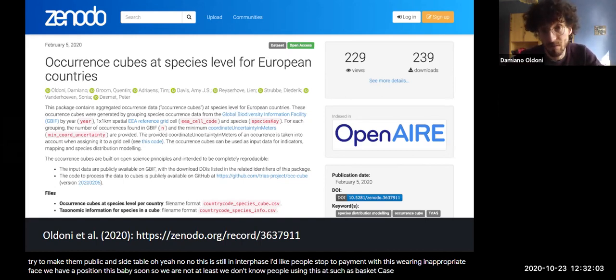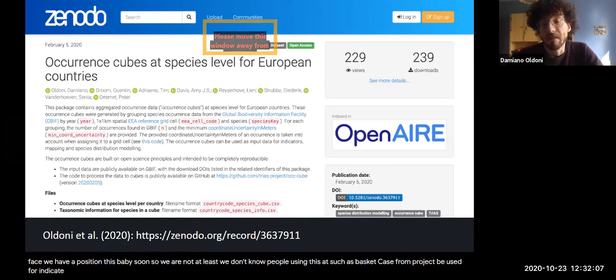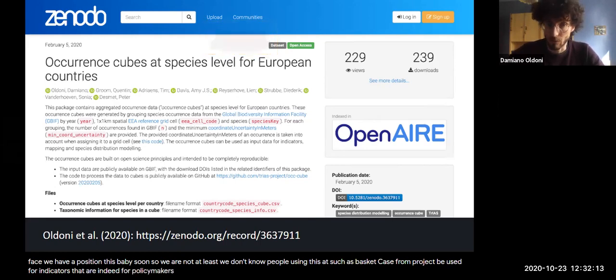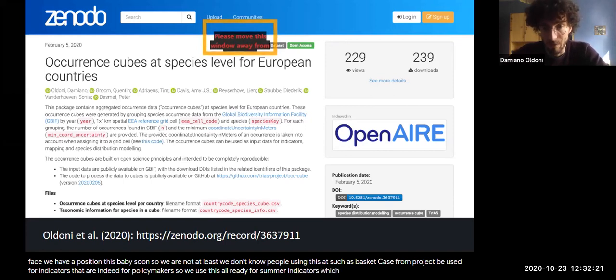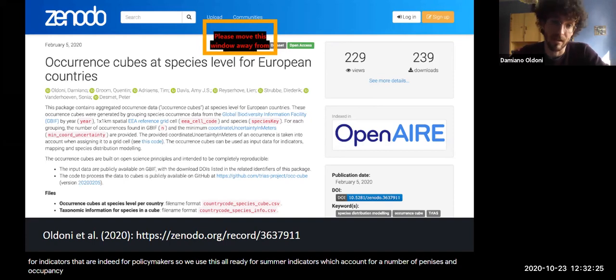We are indeed in a preprint phase. We are publishing this very soon. So we are not... At least, we don't know people using this at such advanced scale yet. We, in TRIAS project, in tracking invasive alien species, we use this for indicators that are indeed for policymakers relevant, at least in Belgium. So we use this already for some occurrence-based indicators.